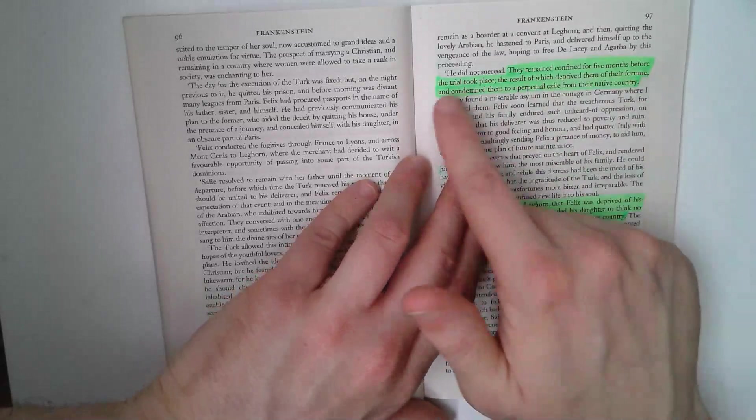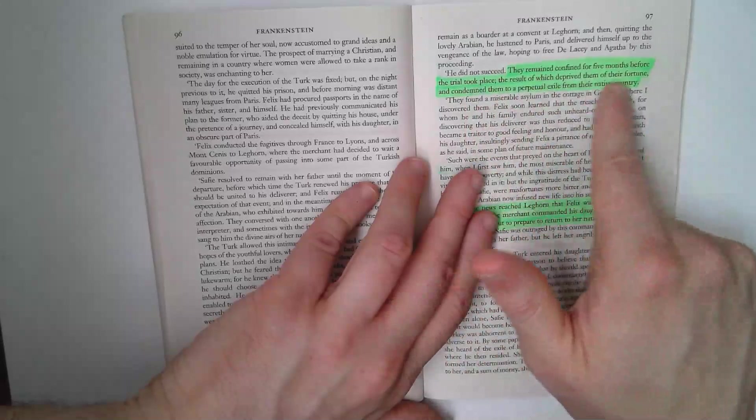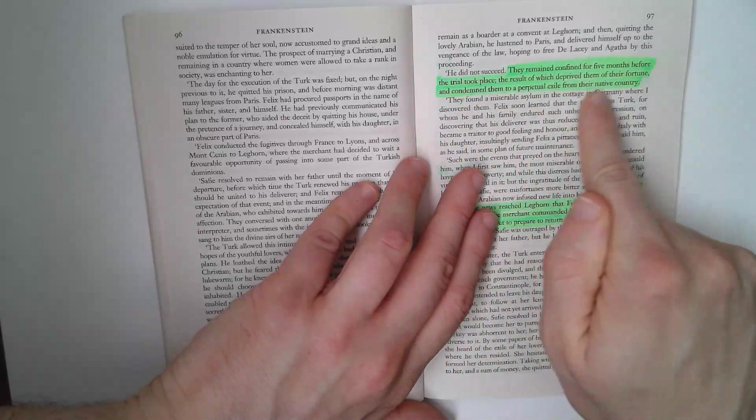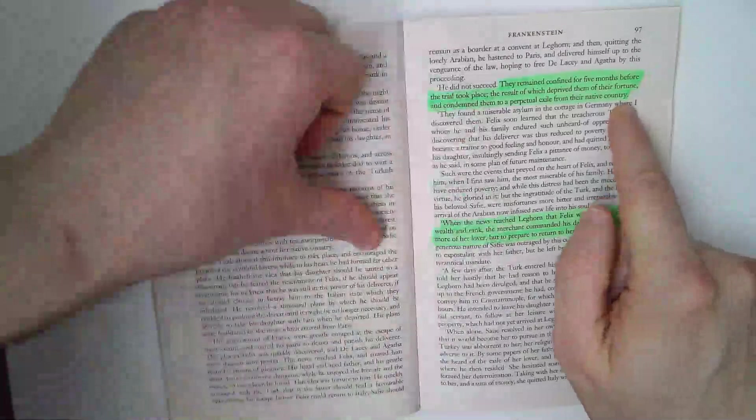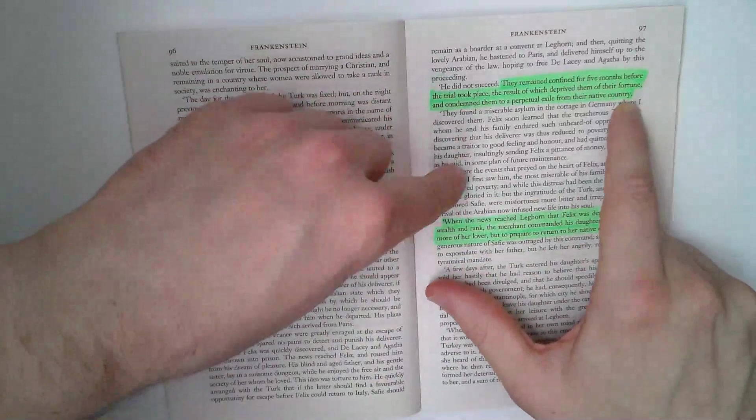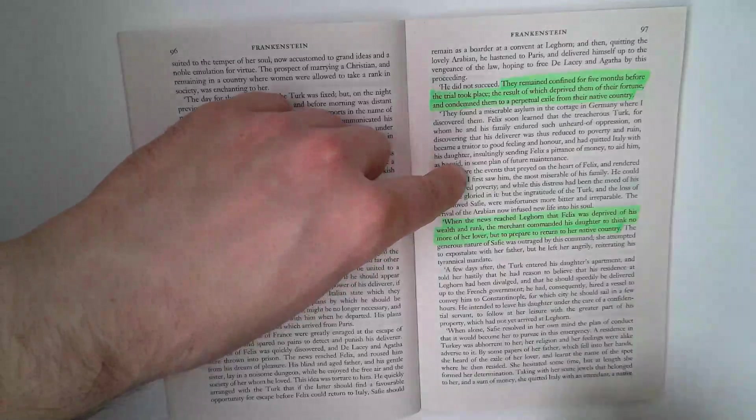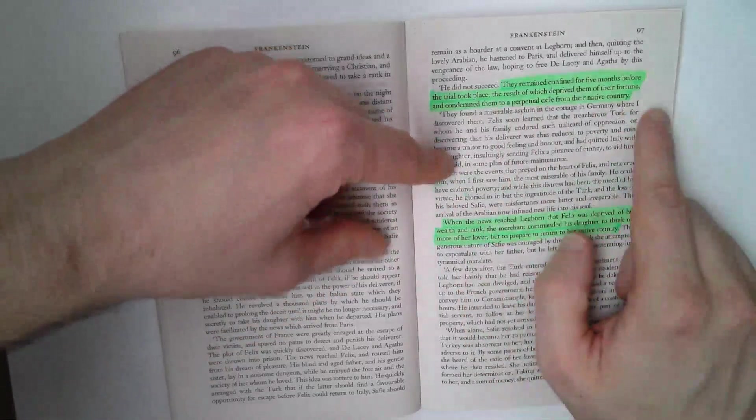They remained confined for five months before the trial took place, the result of which deprived them of their fortune and condemned them to a perpetual exile from their native countries. Felix tries to escape and help out and it leads to the downfall of the family.